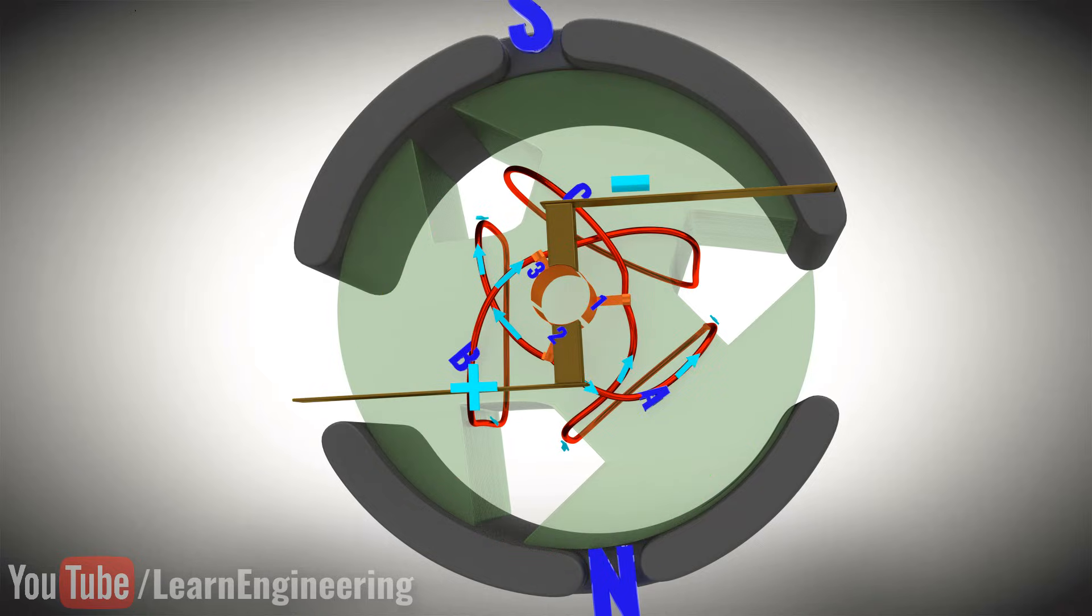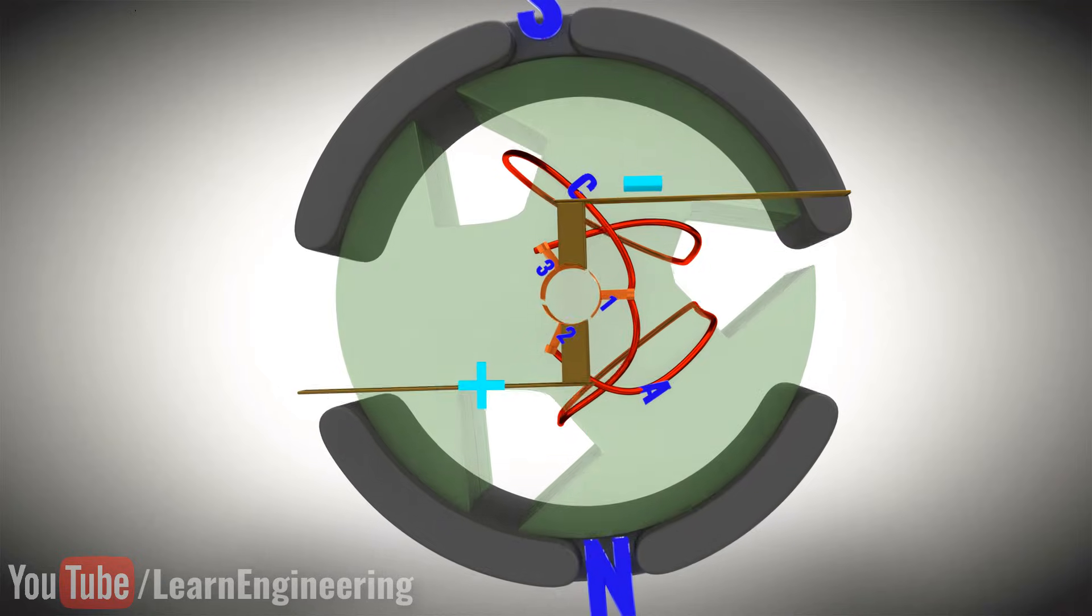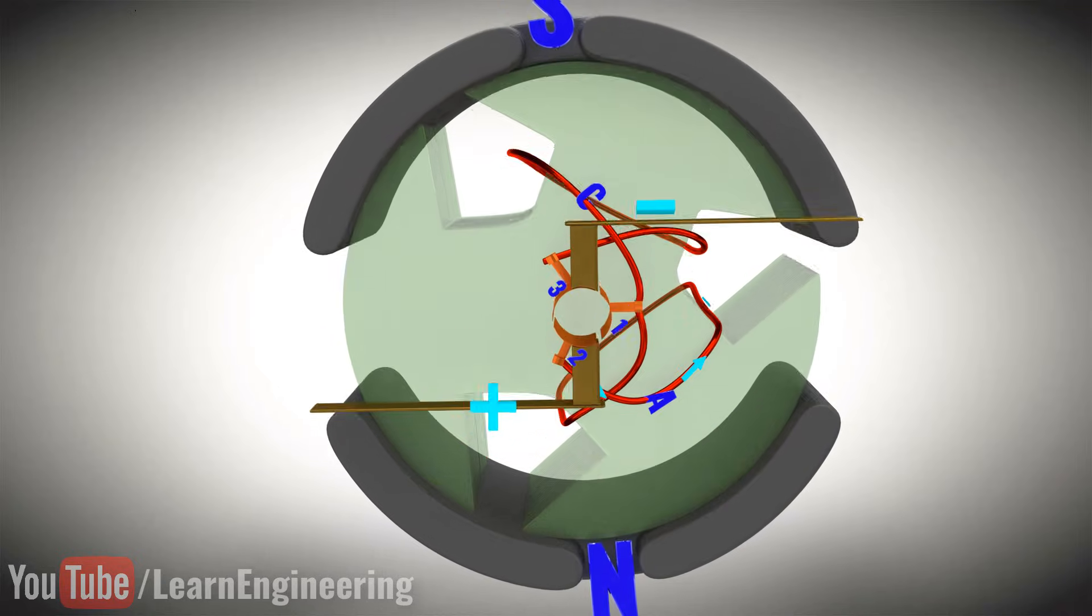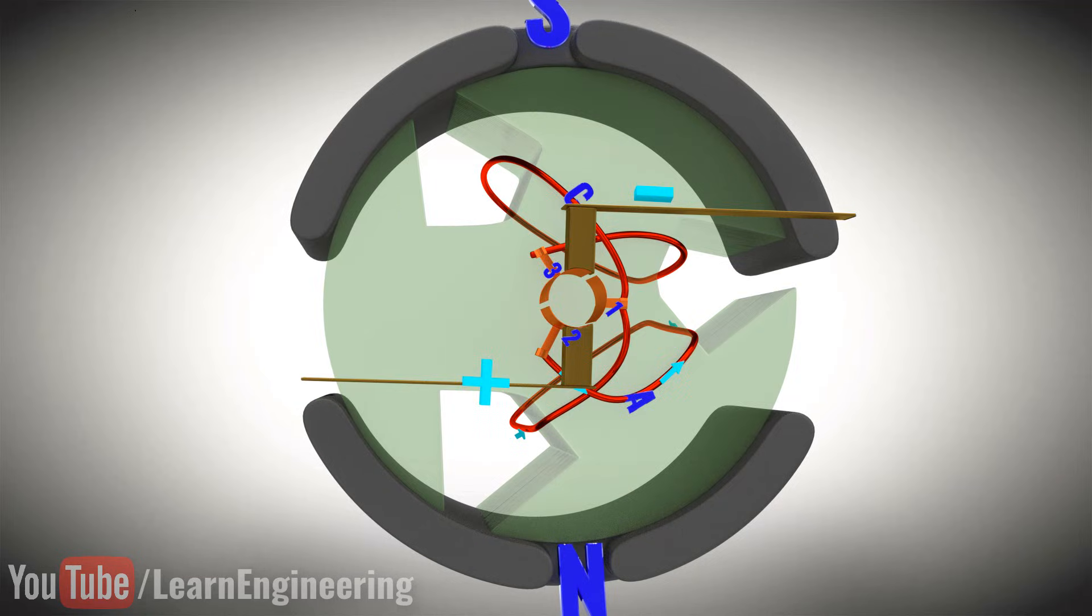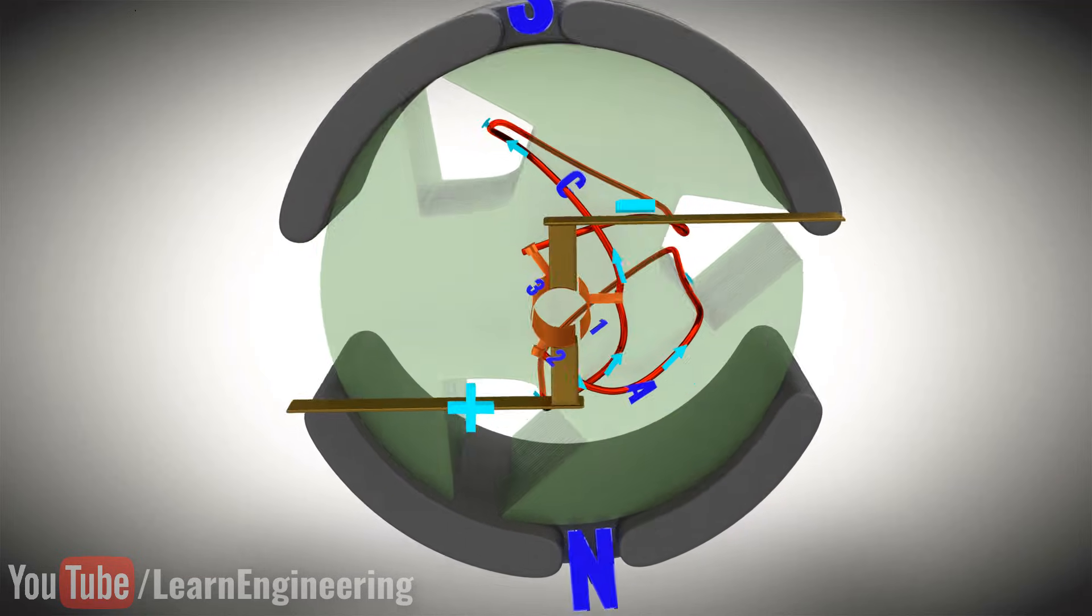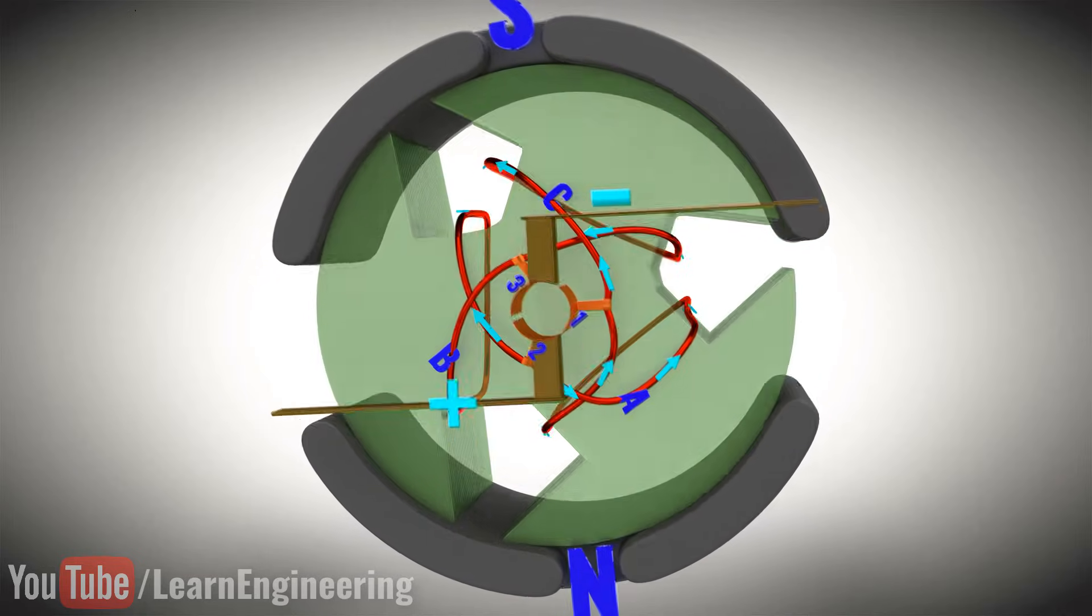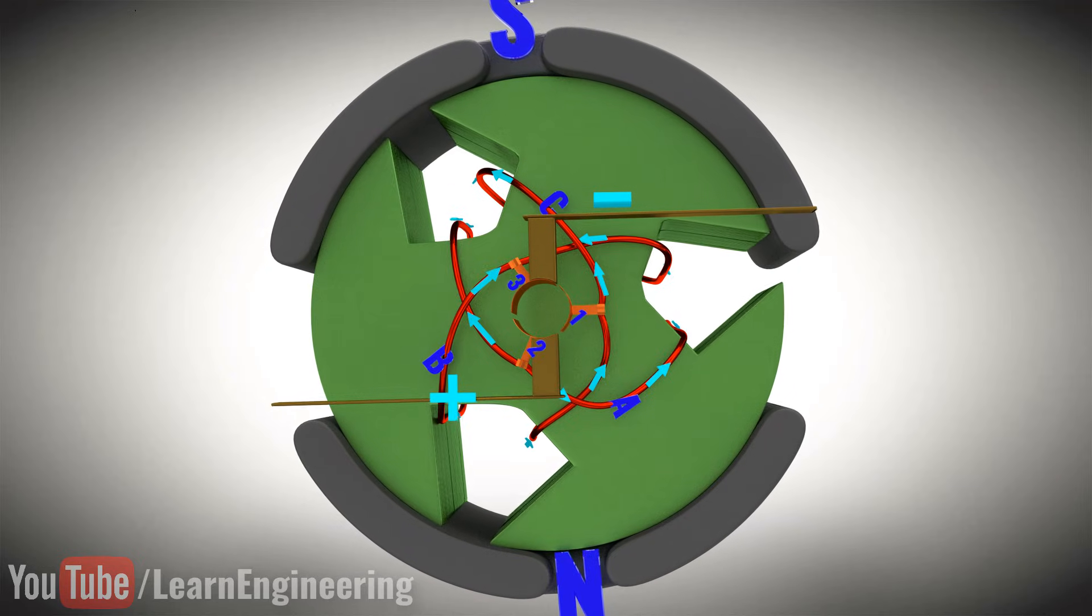As the rotor turns, the brushes come in contact with different commutator rings. The current flow in the coil thus changes again. This process is repeated, and we get continuous rotor rotation. It is amazing to see just how complex the operations of seemingly simple engineering devices truly are.